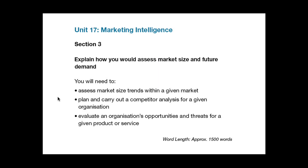In section 3, bullet point 1, the key word here is trends. Look at your data carefully and see if you can identify any hidden or discrete trends — any particular sectors of the market that are perhaps growing or declining at a different rate than the rest of the market. And if so, why do you think this is happening?